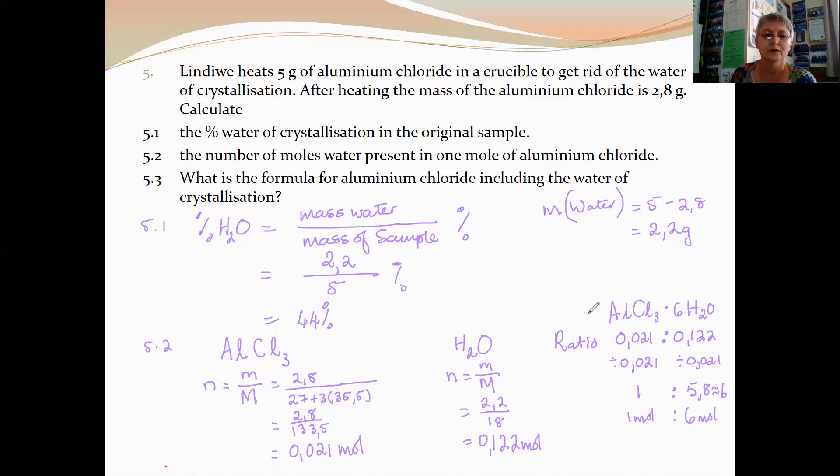And I think I have answered question 5.3 there. What is the formula for aluminium chloride, including the water of crystallization? If you have any questions, please make contact. I will happily help you.